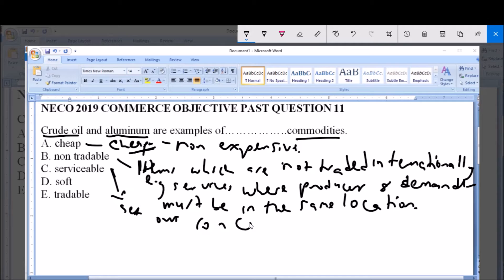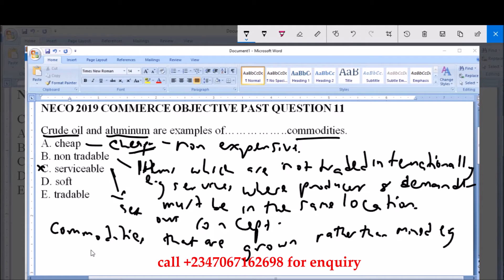Then option D, which is soft, refers to commodities that are grown rather than mined. Examples include crops and crop resources.